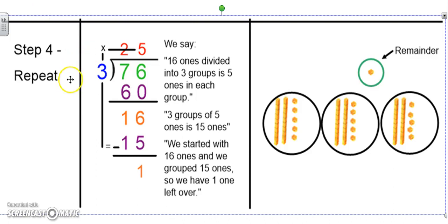So my next step is to repeat. Because I have 16 ones, and I need to divide them into 3 groups, I can put 5 ones into each group. 5 ones into 3 groups is 15, so I subtract out 16 ones minus 15 is 1. And because I can't divide 1 ones into 3 groups, I have a remainder of 1.